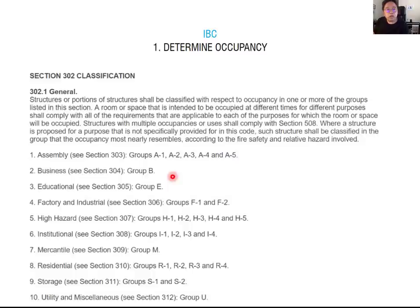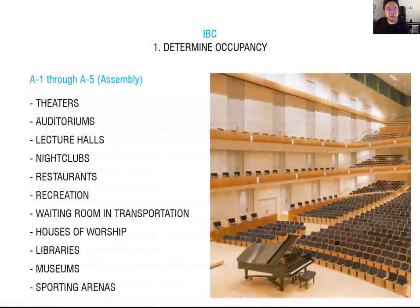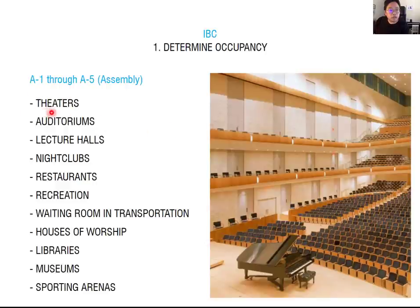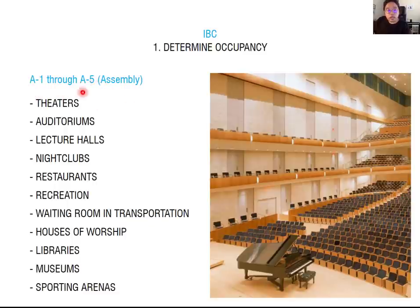Looking at IBC Chapter 3, it indicates ten different occupancies: Assembly, Business, Education, Factory and Industrial, High Hazard, Institutional, Mercantile, Residential, Storage, and Utility. Assembly Group A occupancy is for gathering spaces such as civic, social, or religious functions — theater, auditorium, lecture hall, nightclub, recreation, restaurant, museum, library, and sports arena. It is further categorized A1 through A5. Business (B) occupancy includes use for office, professional, or service-type transactions — like a bank, office, or post office. Importantly, K–12 is educational occupancy, but universities and colleges fall under B occupancy as higher education.